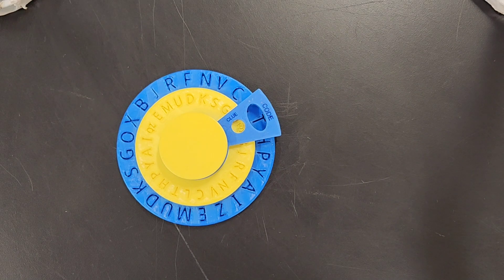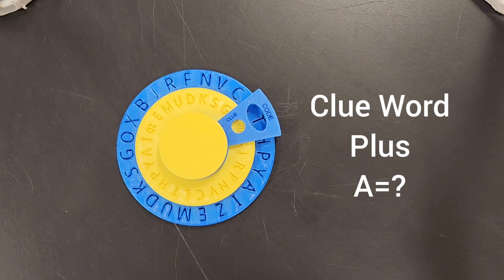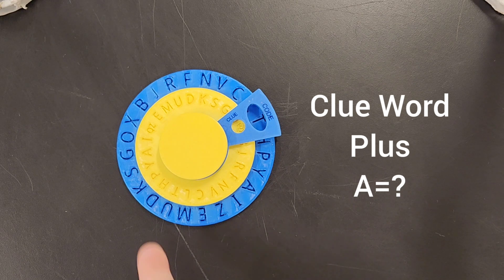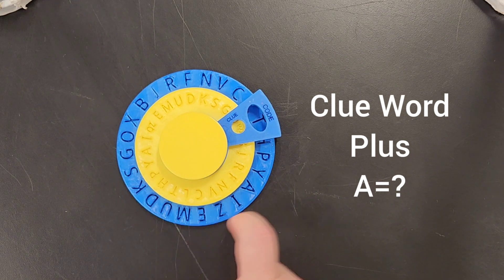Okay, so the first thing you're going to do to get a clue is that's going to give us A equals some letter. That'll be the A clue is going to equal some letter in the code.